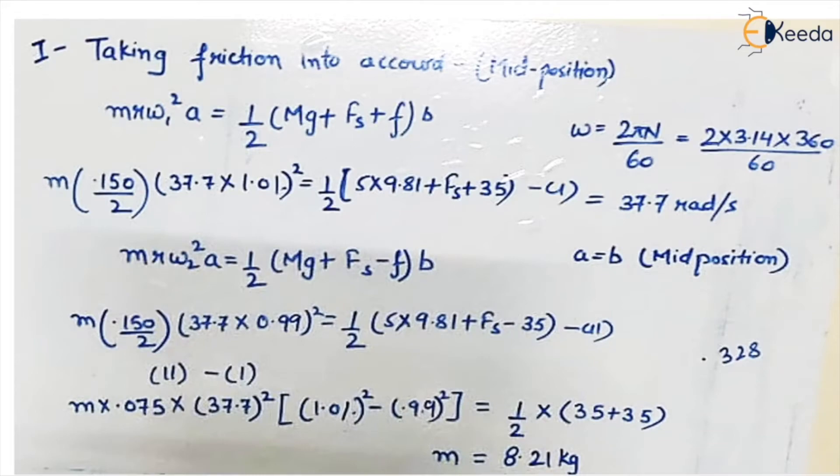The second one is what we are doing - one case is for extreme maximum condition, one case is for the extreme minimum position. So for the minimum speed, 1% change means minus 1%, so that is 0.99. Rest all the values remain same except for the friction. Because when speed is less, your sleeve comes downward and the frictional force acts upward, so it is minus 35. Now when we subtract these two equations, F gets cancelled out, and by solving this we get the value of M which is 8.21 kg.